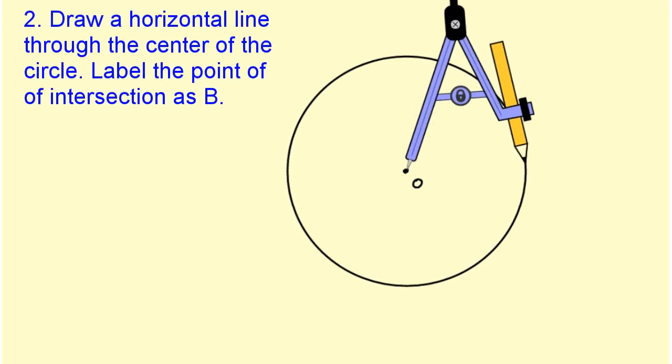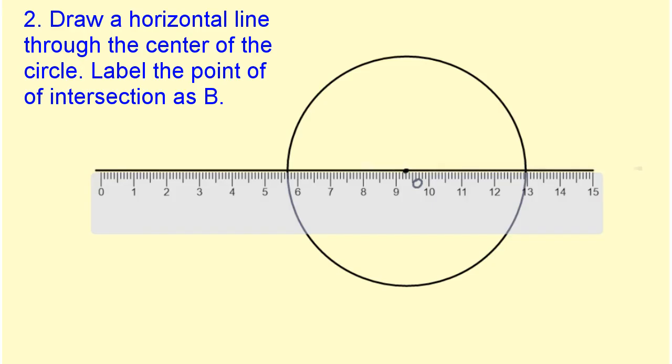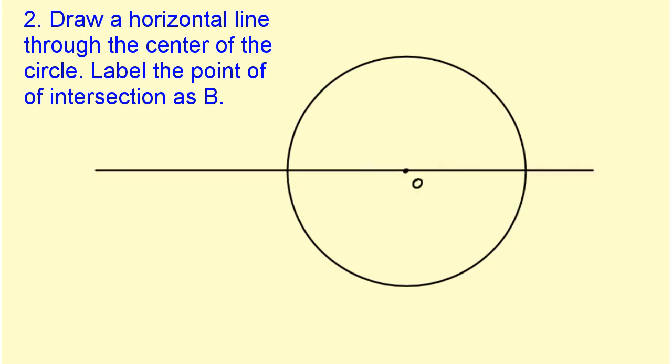Next I'm going to draw a horizontal line through the center of the circle. I'm going to mark the point of intersection here as point B.